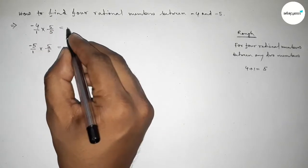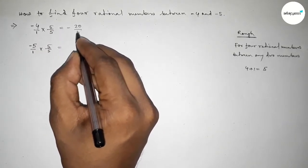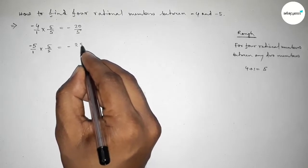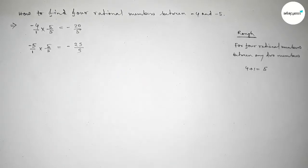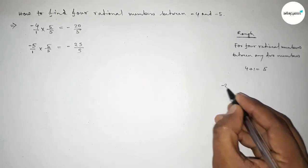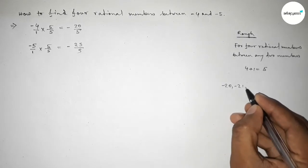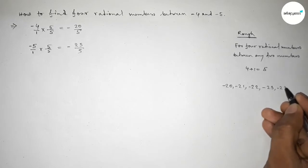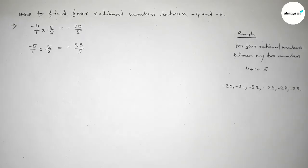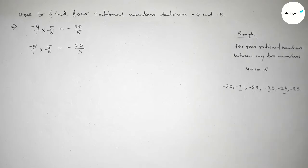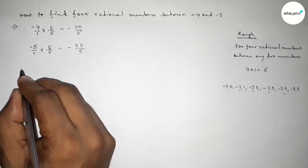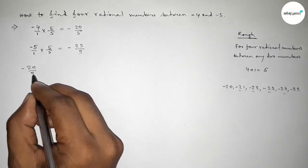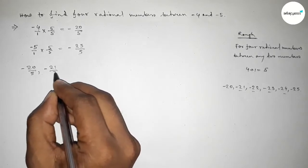So here equal to minus twenty over five and here minus twenty-five over five. Now between minus twenty to minus twenty-five we can get four negative integers. So these are the four negative integers.